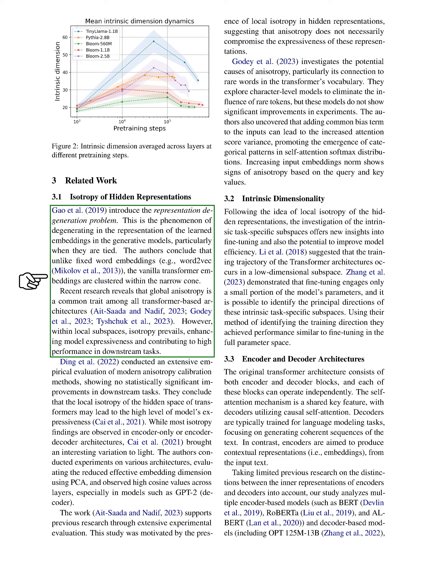We've found that unlike fixed-word embeddings such as Word2Vec, the embeddings in a basic transformer model tend to cluster within a narrow cone. Recent studies have shown that this kind of anisotropy, or direction dependence, is common in all transformer-based architectures. However, within smaller local subspaces, the embeddings are isotropic, or direction-independent, which makes the model more expressive and improves its performance in downstream tasks. We've also found that despite various methods to calibrate anisotropy, there's no significant improvement in downstream tasks, suggesting that local isotropy in the hidden space may be what makes the model so expressive.